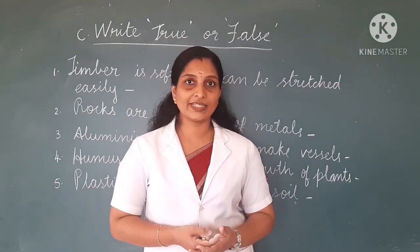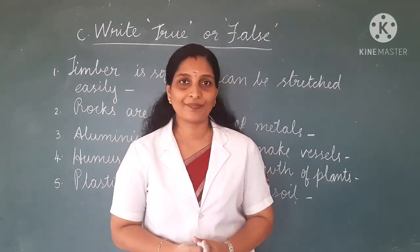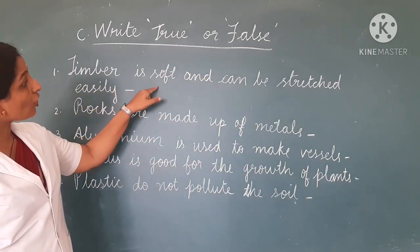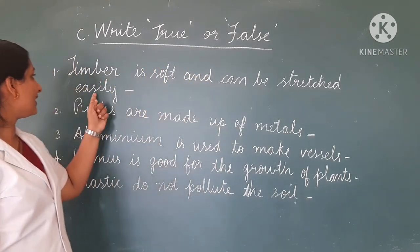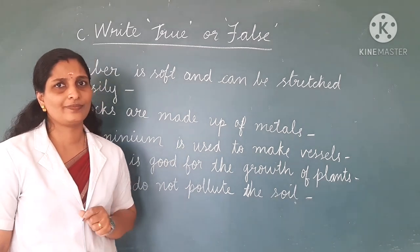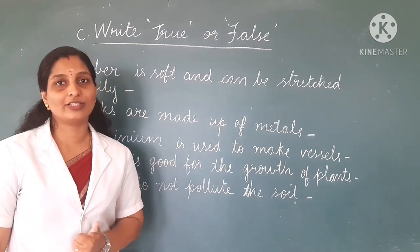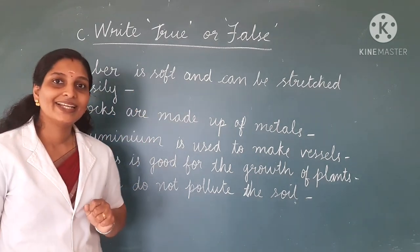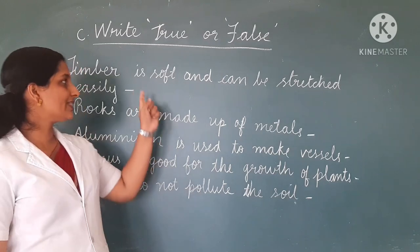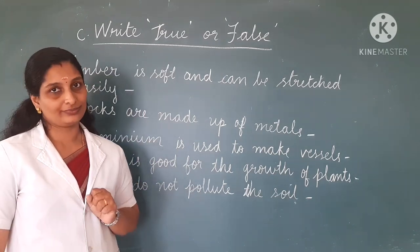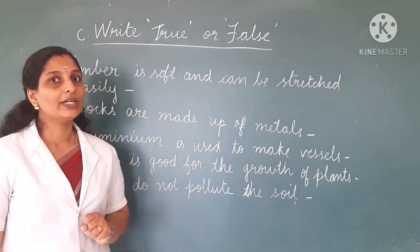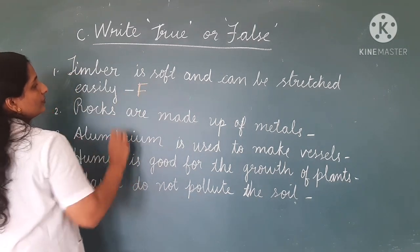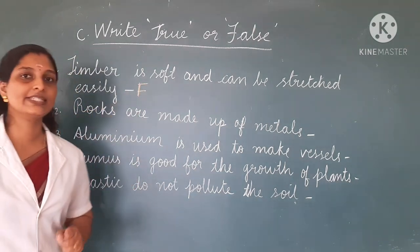The third exercise is write true or false. First sentence: rubber is soft and can be stretched easily. Is it true or false? Yes — it is true, because rubber is soft and can be stretched easily. Wait — the sentence says 'temporary is soft,' which is wrong. So this sentence is false. You have to put F for false.